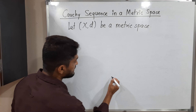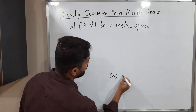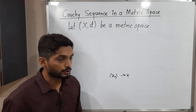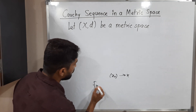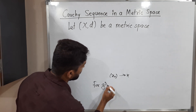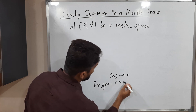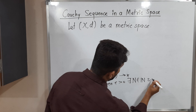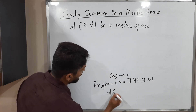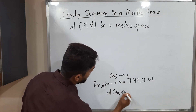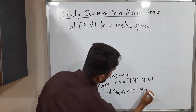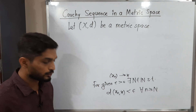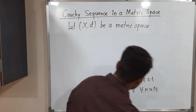Suppose we have a sequence x_n and it converges to x. We are familiar with the epsilon definition: for given epsilon greater than 0, there exists N belonging to the set of natural numbers such that d(x_n, x) is less than epsilon for all n greater than or equal to capital N. This is the definition of convergent sequence.